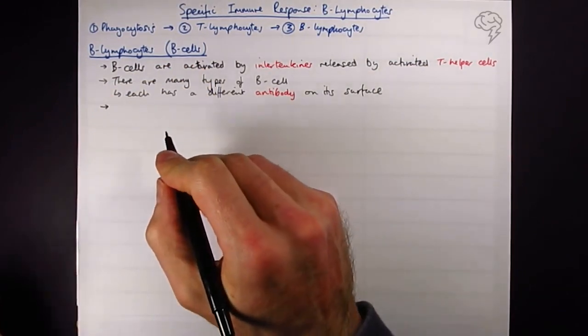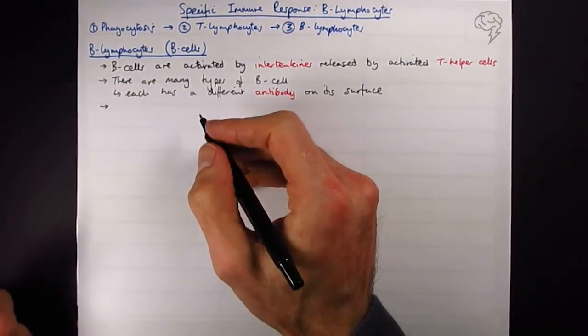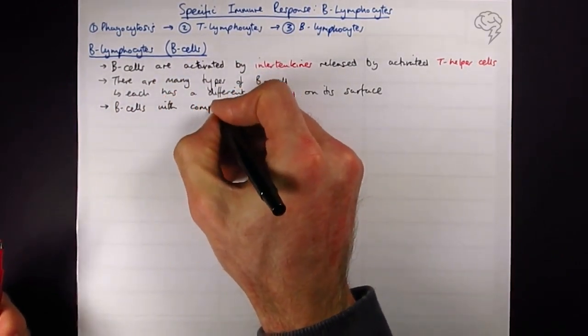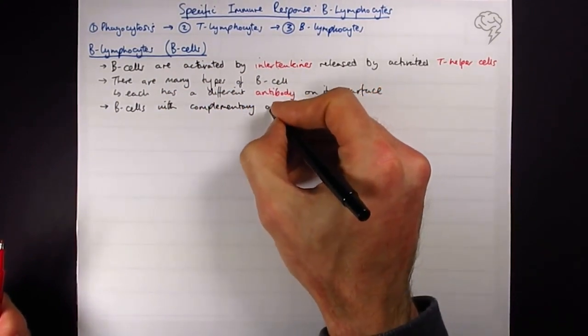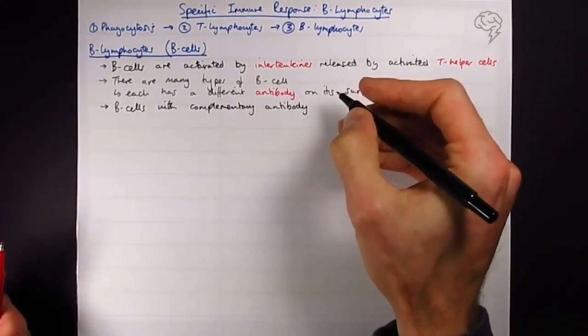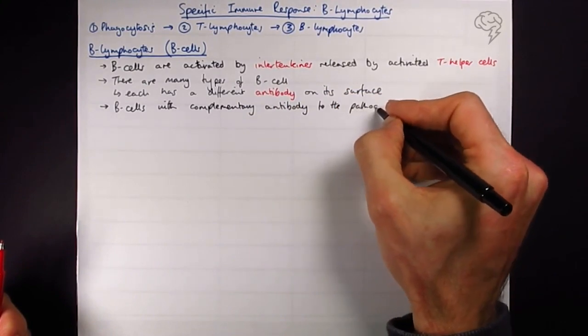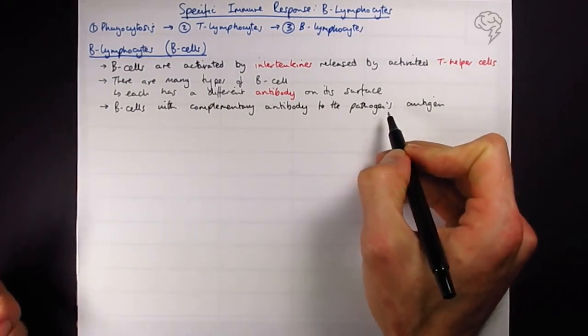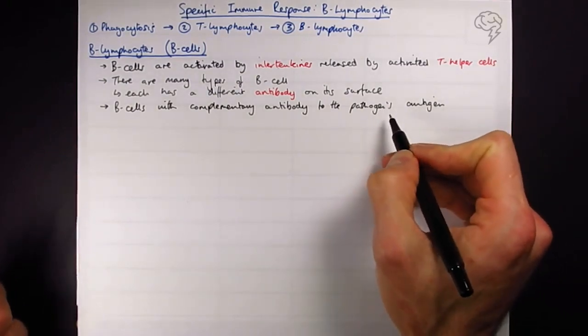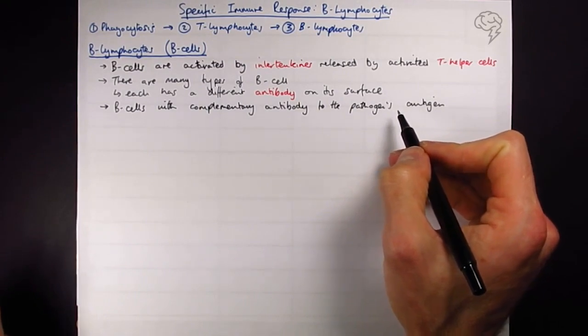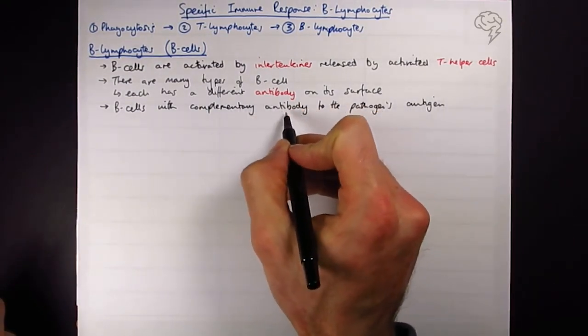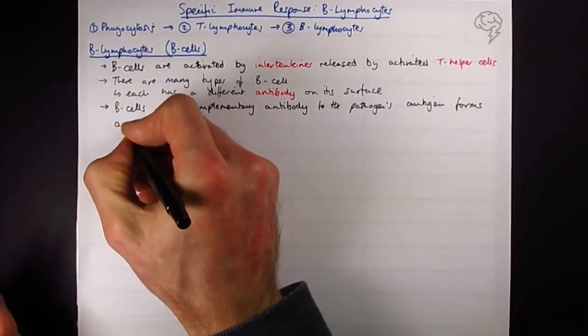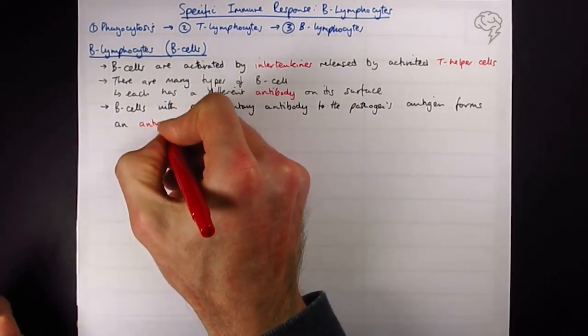So B cells with the complementary antibody to the pathogen's antigen form an antigen antibody complex. Pathogen, antigen - it's very easy to get these the wrong way around. You might even catch me saying it wrong once or twice. But the pathogen has an antigen and the human body cells produce antibodies. Key term, bit of a long one: an antigen antibody complex.